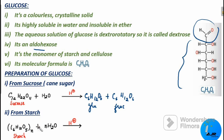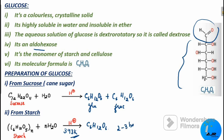Glucose is also prepared commercially from starch. It is obtained by hydrolysis of starch by boiling with dilute sulfuric acid at 393 Kelvin. The pressure should be maintained between 2 to 3 bar. So it is easy to prepare glucose from both sucrose and starch.